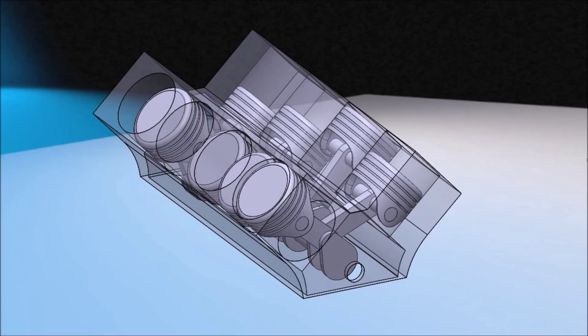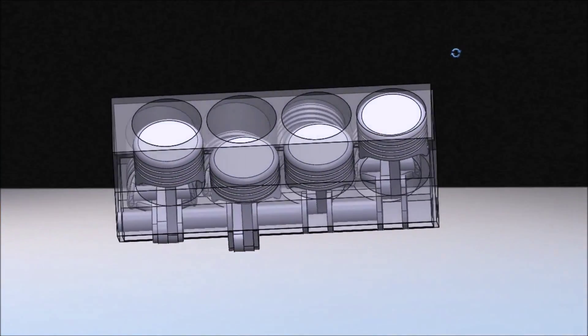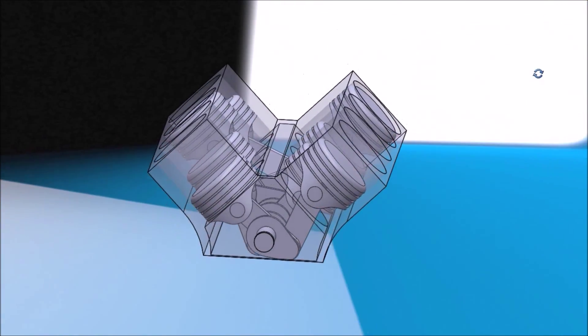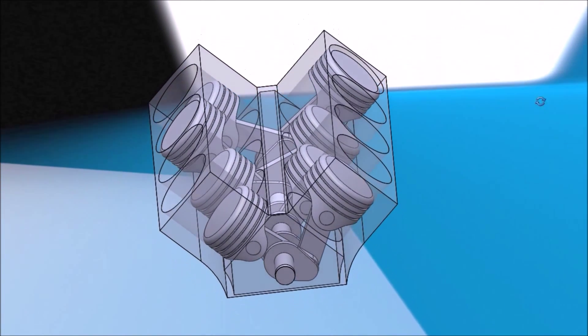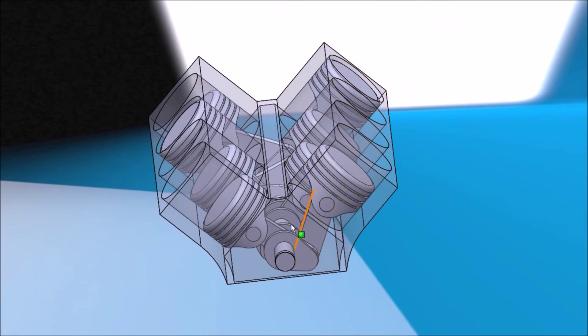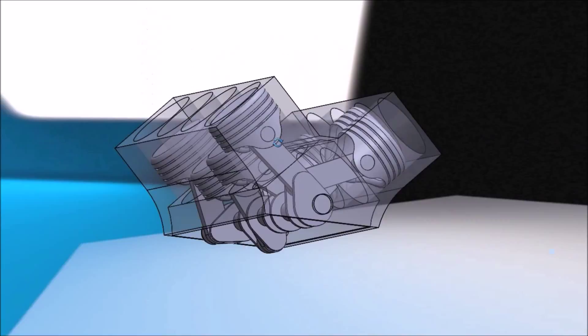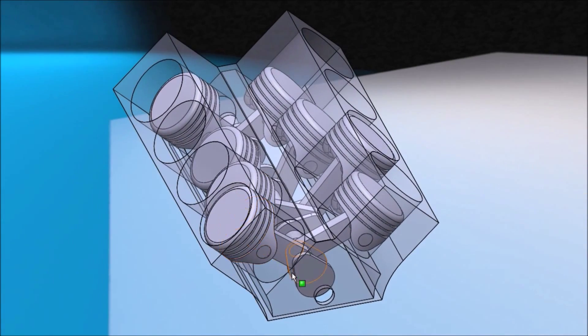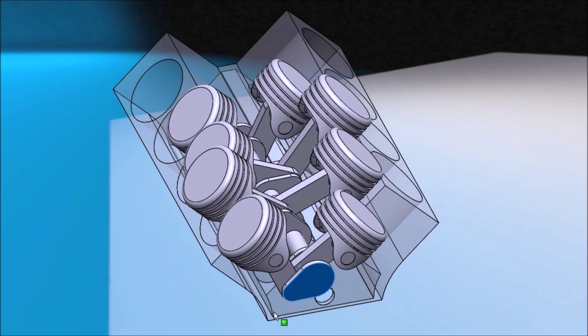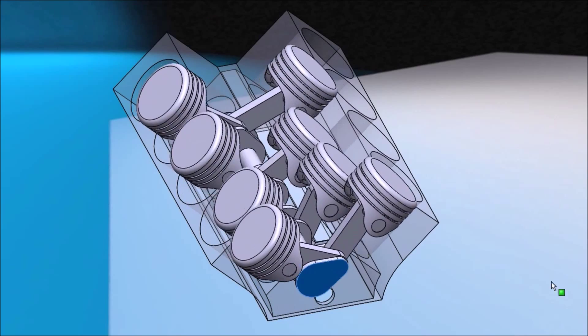So this is a V8 and I didn't spend very much time making this. This is just a simple example. This is what the block would look like. As you can see the pistons, there's eight pistons, hence the V8, and they're in a V pattern. The V8 will look something like this when it's running. I think it's very fun to watch.